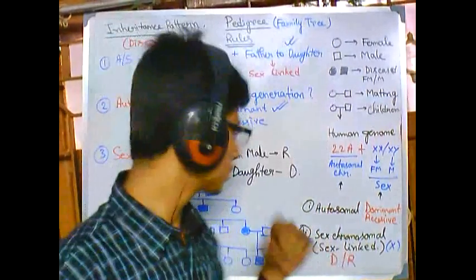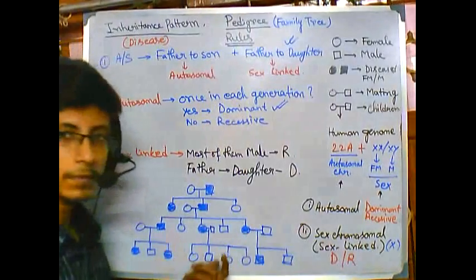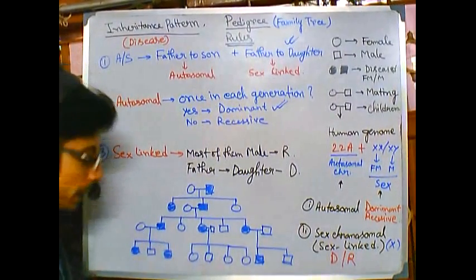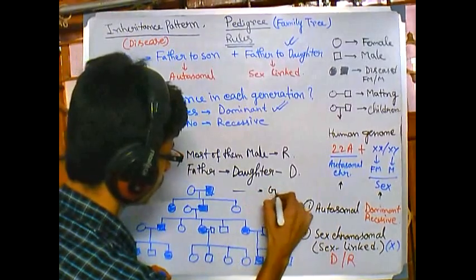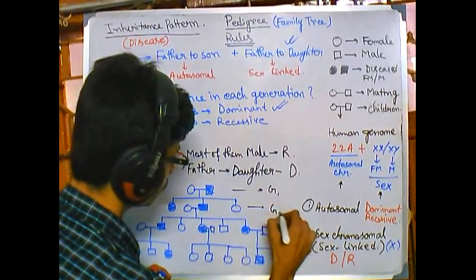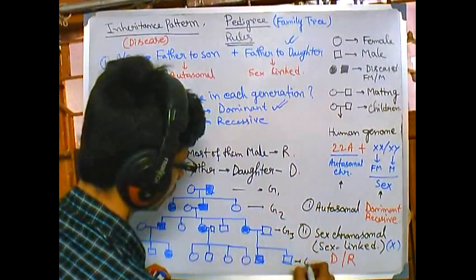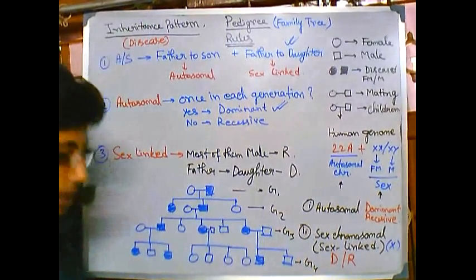Okay guys, now let us look at this pedigree. This is a pretty big pedigree because we are having four generations. So this is generation 1, generation 2, generation 3, this one is generation 4. Four generation pedigree.